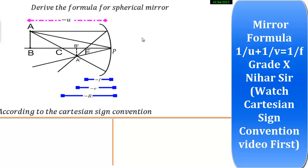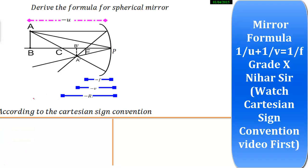If you have been asked to derive the formula for a spherical mirror in the examination, you need to show the following steps in the exam. First is: according to the Cartesian sign convention. Let me explain in short what Cartesian sign convention is, so that you can understand it better.